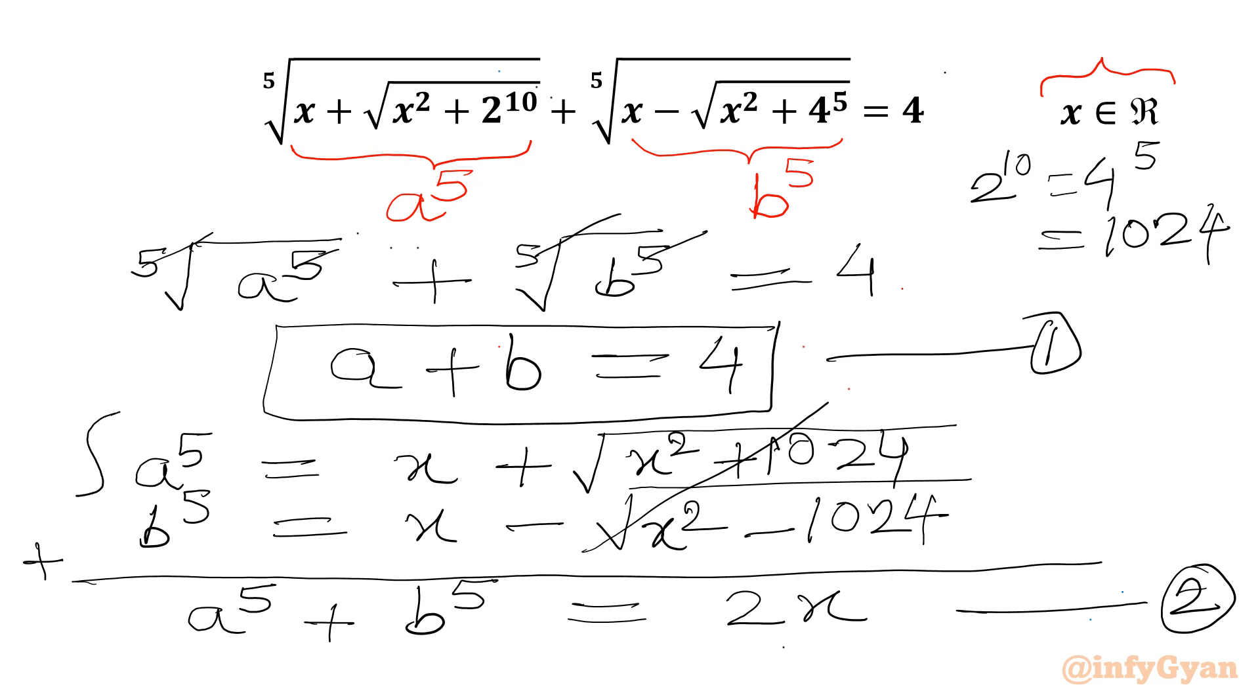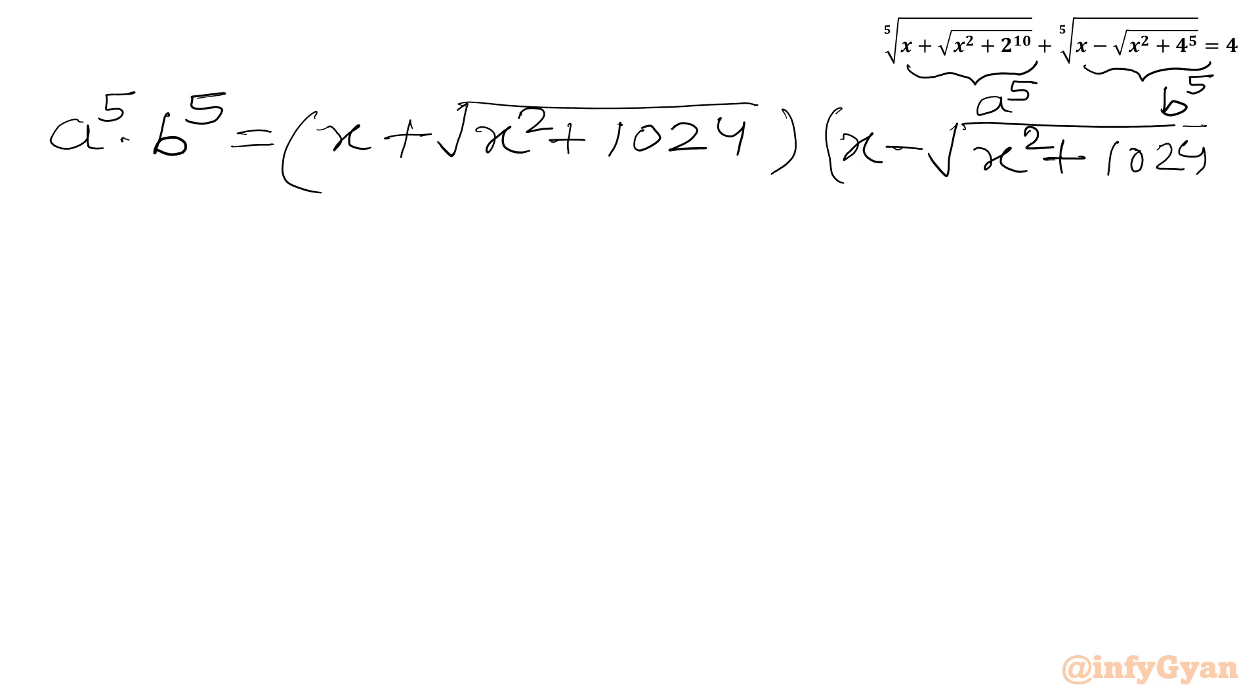Now we will consider product of these two. A power 5 times b power 5. So I can write here this is our a power 5. This radicand is our b power 5. Let's multiply. a power 5 times b power 5. We can write x plus square root of x square plus 2 power 10 is 1024 times b power 5. So x minus square root of x square plus 1024. Now I will write one algebraic formula. a plus b times a minus b equal to a square minus b square.